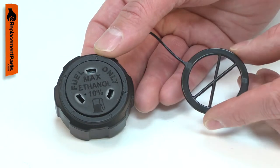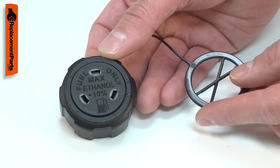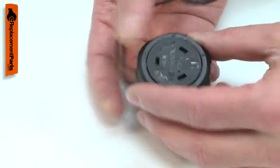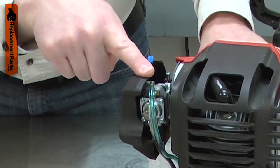The vent allows air back into the fuel tank as the fuel level drops. If air can't get in, a vacuum forms, and the fuel will stop flowing to the carburetor.